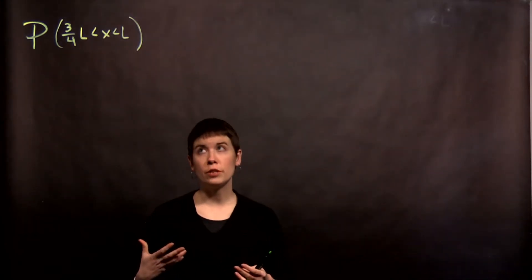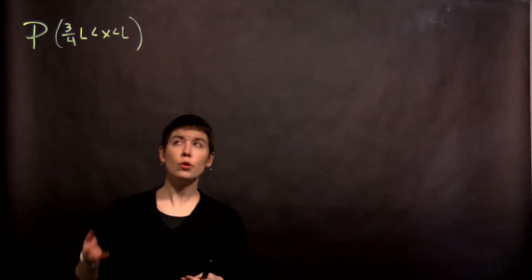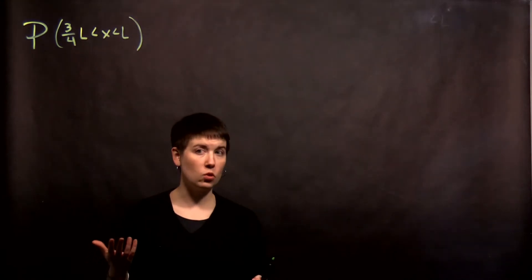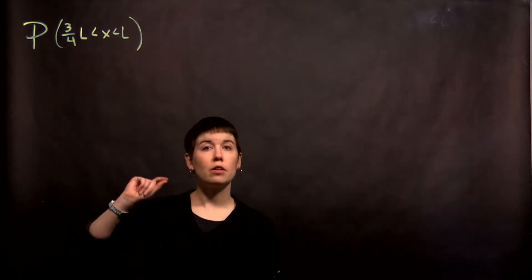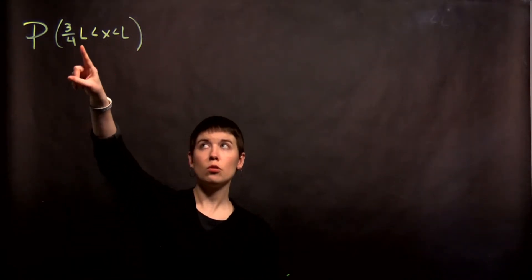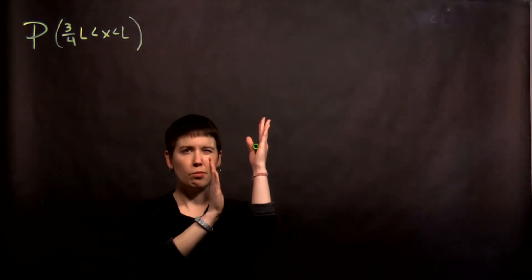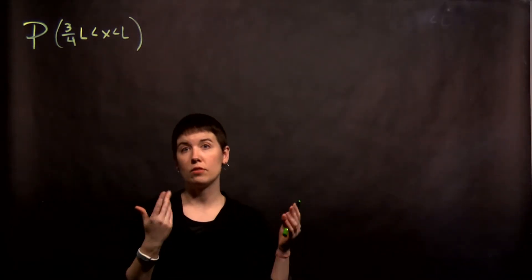Let's do a probability calculation. The question is, if we have a particle that is in an infinite square well, what is the probability of finding that particle between 3 quarters of l and l? So effectively, we have our well, what's the probability of finding it in this far last quarter?